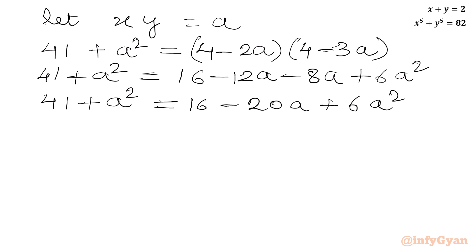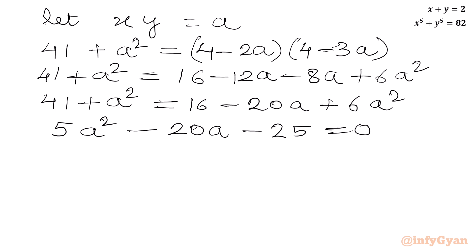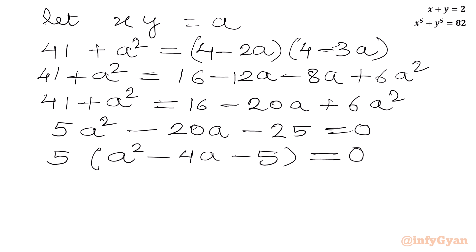Now taking all the terms to the RHS: 6a squared minus a squared gives 5a squared, minus 20a, and 16 minus 41 gives minus 25, all equal to 0. Taking 5 as common factor, in the bracket we get a squared minus 4a minus 5 equal to 0.